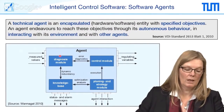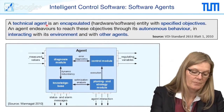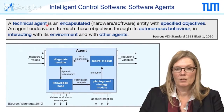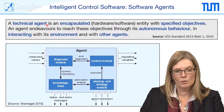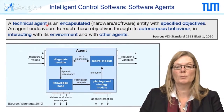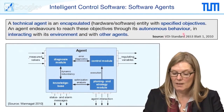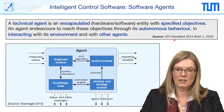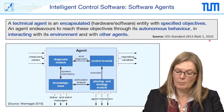What does this have to do with an agent? An agent, as per definition, is a technical agent — an encapsulated hardware-software entity with specific objectives. An agent enables reaching these objectives through its autonomous behavior by interacting with its environment and with other agents. This is according to the VDE standard, a German standard from the Association of Engineers.